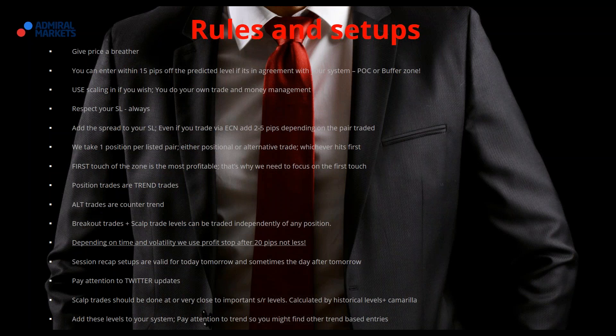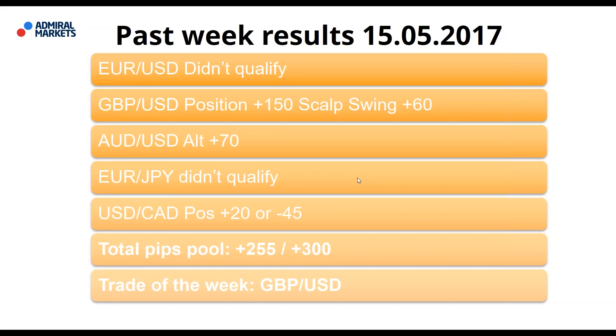Past week results: Euro-dollar didn't qualify. Pound-dollar positional trade was good for around 50 pips, and scalp swing was possibly good for 60 pips. Pound-dollar was definitely the trade of the week. Australian dollar alternative setup was 70 pips. Euro-yen didn't qualify. Dollar CAD positional was 20 or minus 45 pips. Dollar pips pool was 255 up to 300. The trade of the week was pound-dollar.